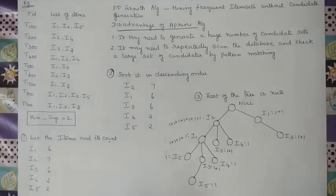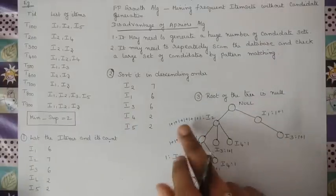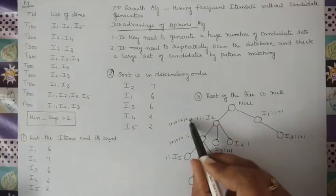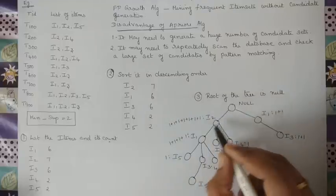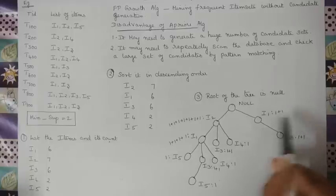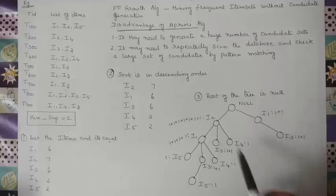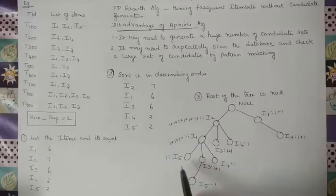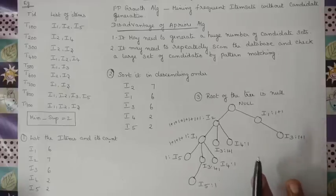To verify that the tree is correctly drawn, add up the counts for each item and check whether they match the original counts. For I2: 1+1+1+1+1+1+1 = 7. Correct. For I1: counts total 4 plus 2 = 6. Correct. For I3: 2+2+2 = 6. Correct. For I4: 1+1 = 2. Correct. For I5: 1+1 = 2. Correct. The tree is perfectly done.